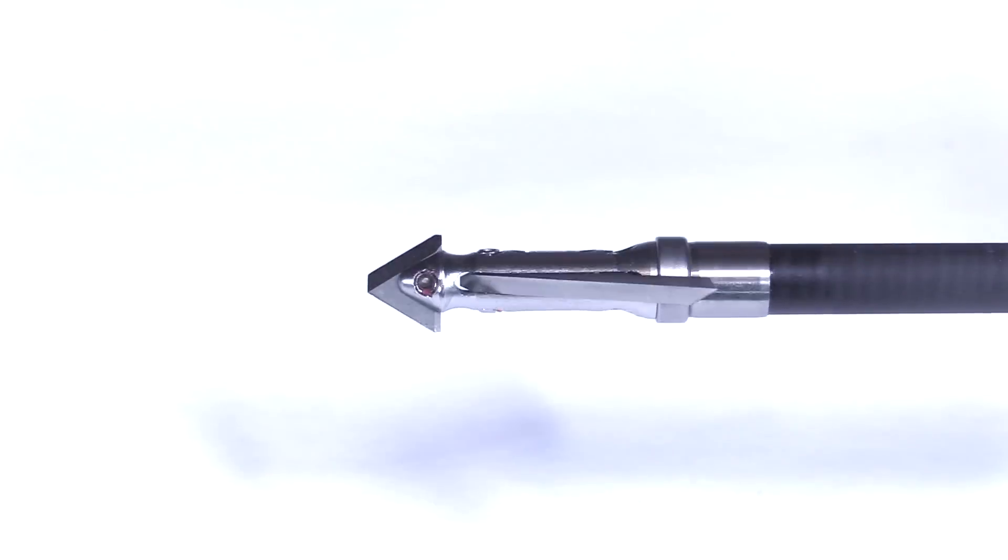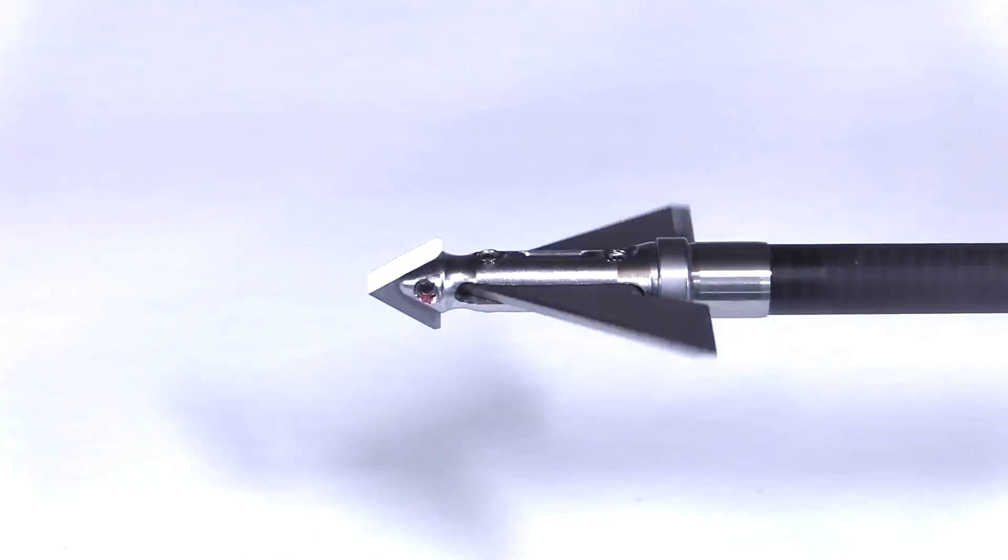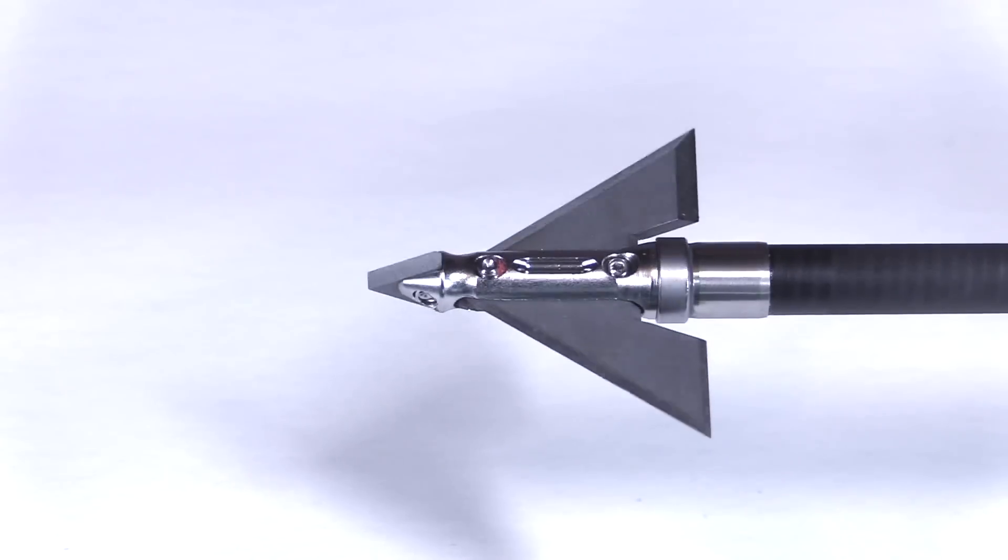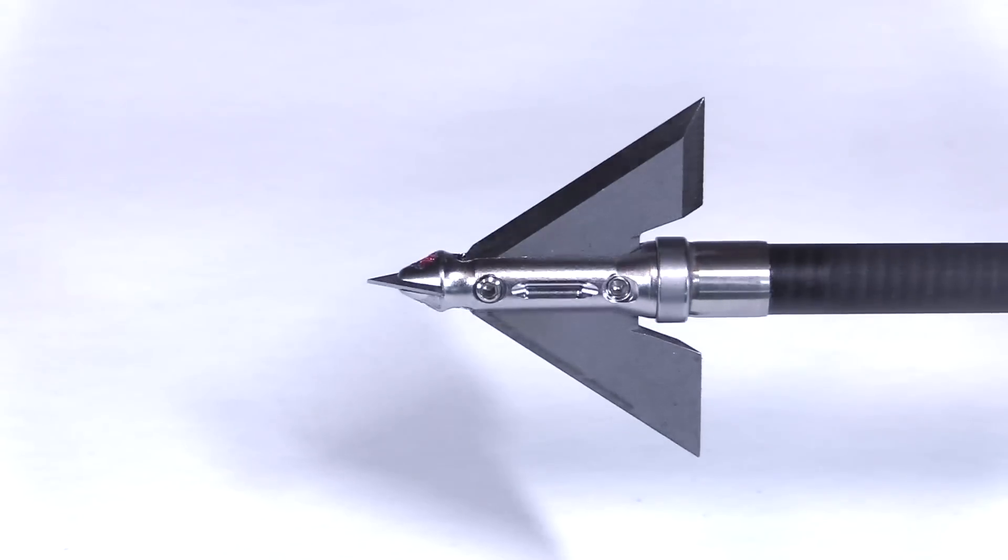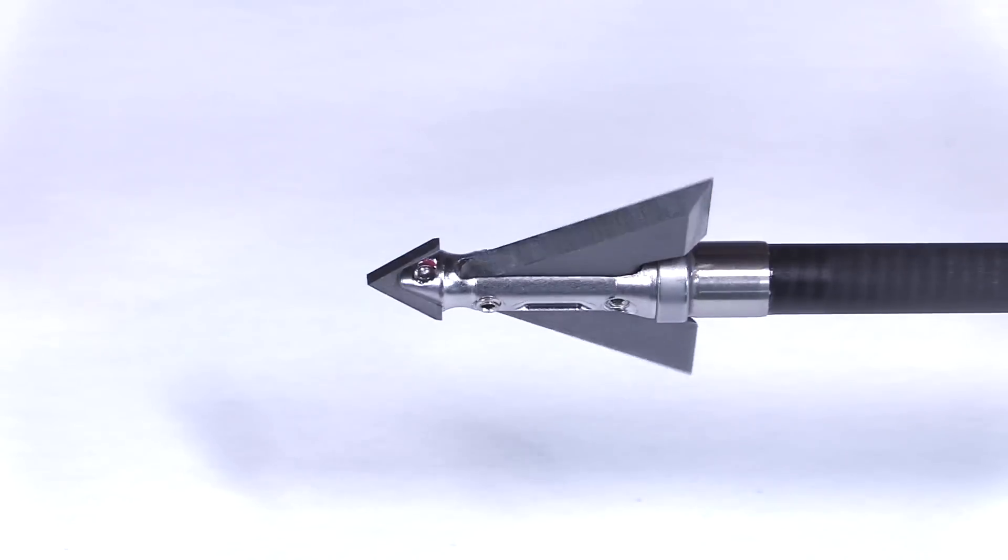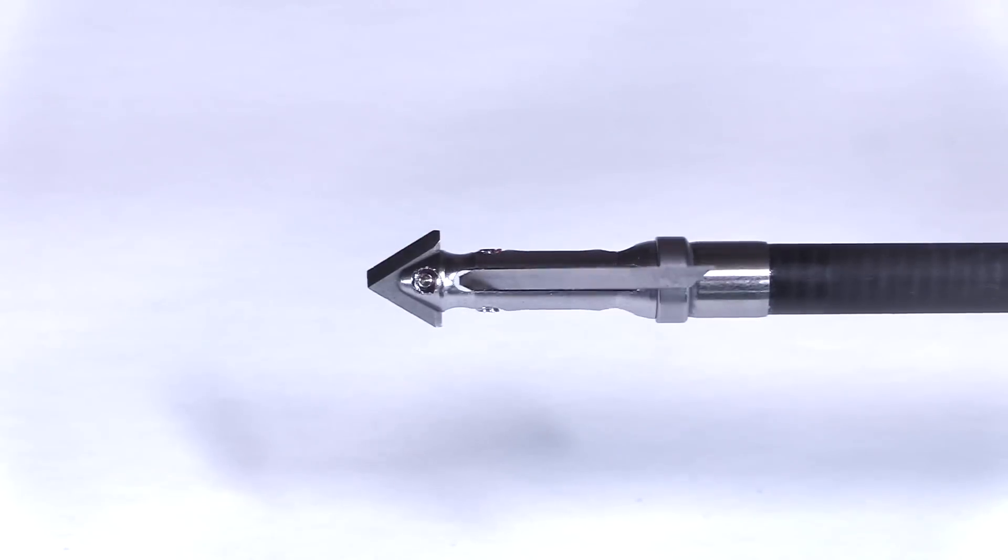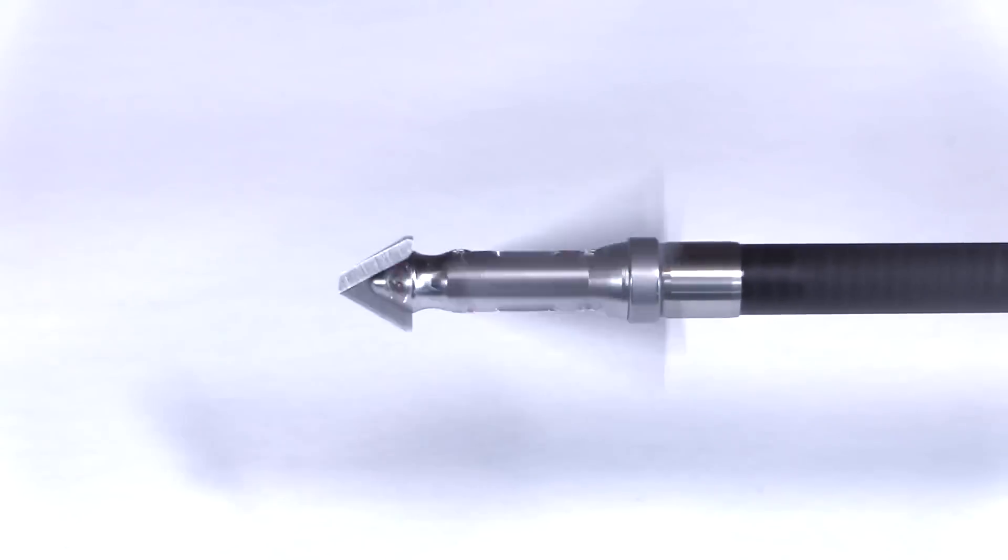So man, this is a wicked looking head. I'm eager to see how it performs, how it flies, how durable it is. But man, if this hits something it's going to definitely pack a wallop, especially with that cut size, with that cutting diameter, and then with that single bevel, super thick blade. So let's check out this Trifecta one and a half inch 150 grain and see how it performs.